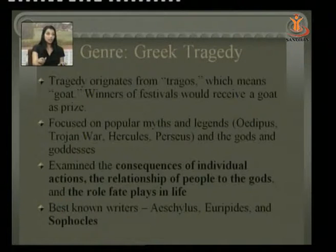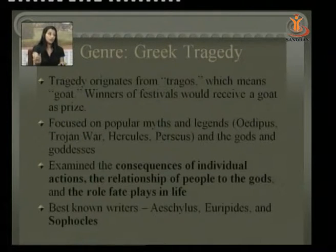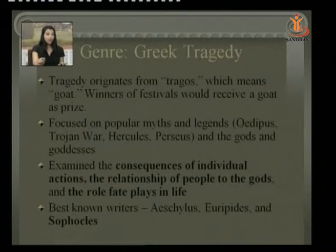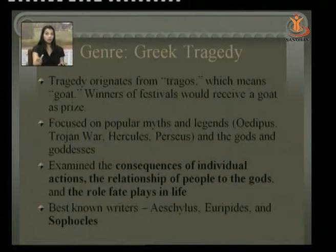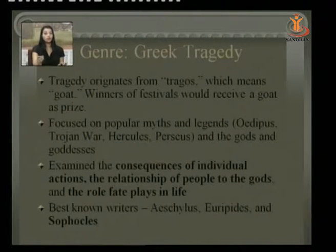Greek tragedy focused on popular myth and legend — Oedipus, the Trojan War, Hercules, Perseus — and the gods and goddesses were the theme or content. It examined the consequences of individual action, the relationship of people to the gods, and the role fate plays in life, which even to this day is one of the most important topics for drama. The best-known writers of those ages were Aeschylus, Euripides, and Sophocles.